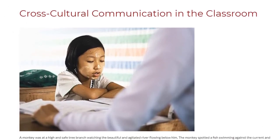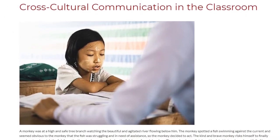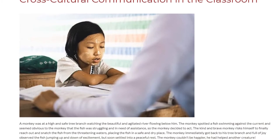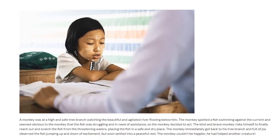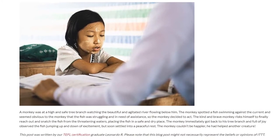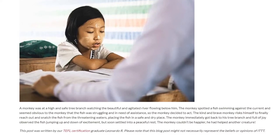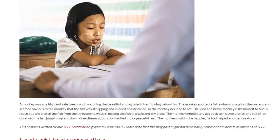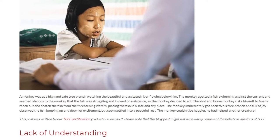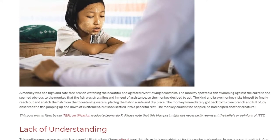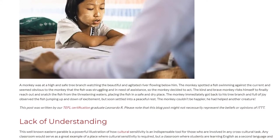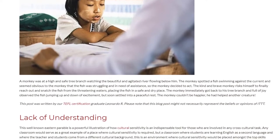A monkey was in a high and safe tree branch watching the beautiful and agitated river flowing below him. The monkey spotted a fish swimming against the current and it seemed obvious that the fish was struggling and in need of assistance. So the monkey decided to act. The kind and brave monkey risked himself to finally reach out and snatch the fish from the threatening waters, placing the fish in a safe and dry place.